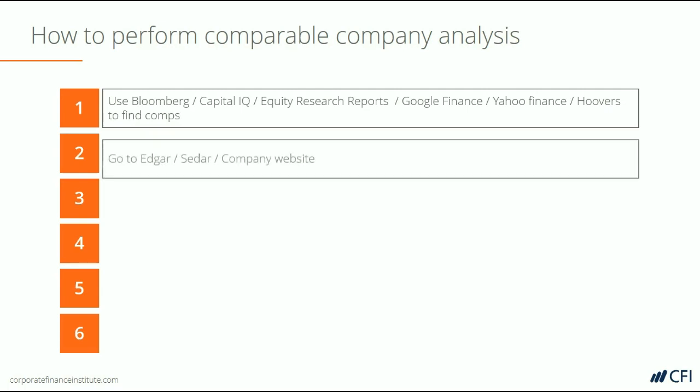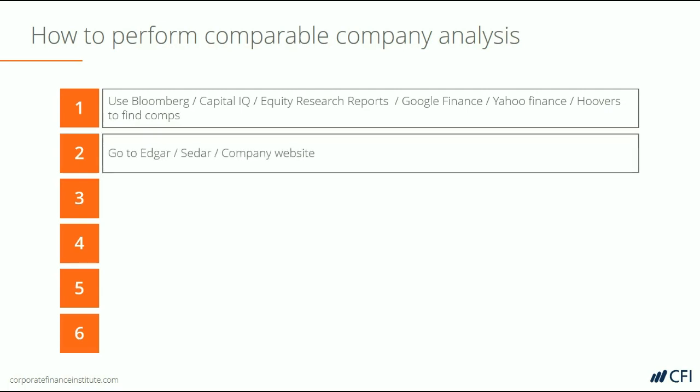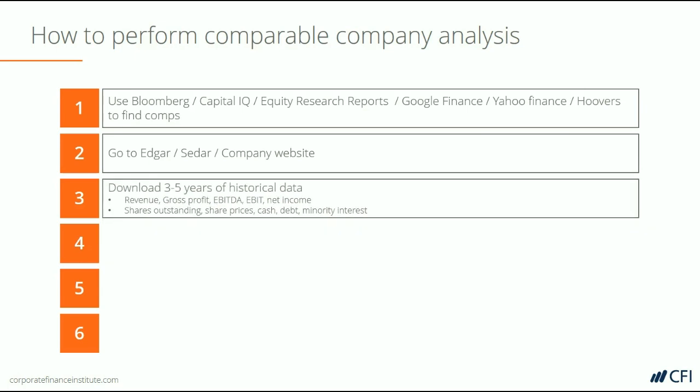Once you have your list, you can go to Edgar or the company's website and download the financial information that you need. Then you're going to download three to five years of historical data, which means you need the company's annual reports and quarterly reports.